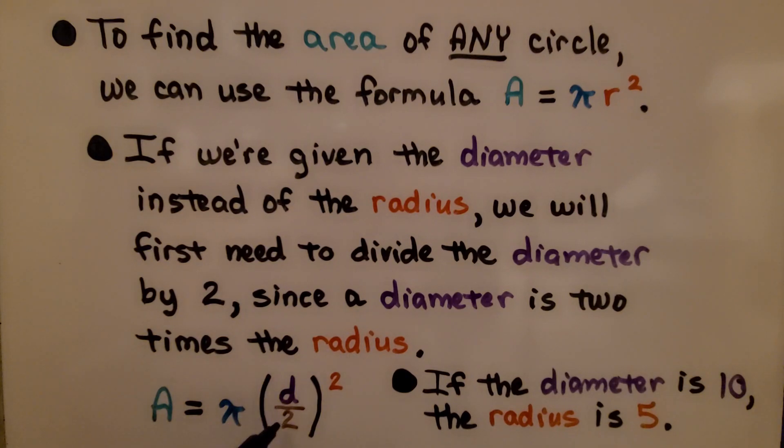We would have to divide the diameter by 2, we'd get the radius, and then we square it. So if the diameter is 10, the radius is 5.